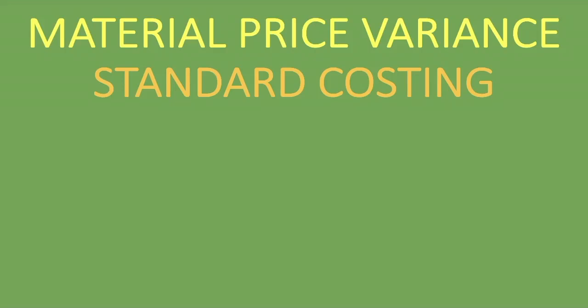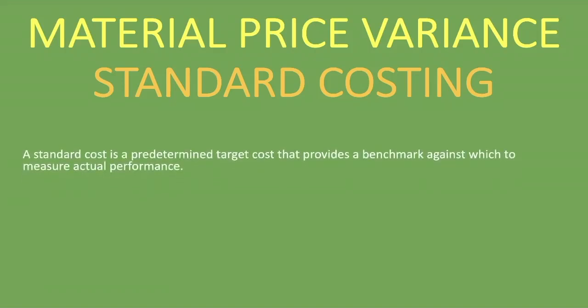Welcome to Kontacts. In this lesson we're going to be looking at the material price variance. We're continuing with our lessons on standard costing — we've done the other formulas and explained them, and you'll find those lessons in the links in the description below. A standard cost is a predetermined target cost that provides a benchmark against which to measure actual performance.